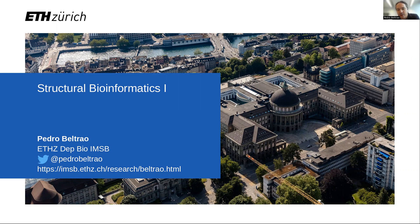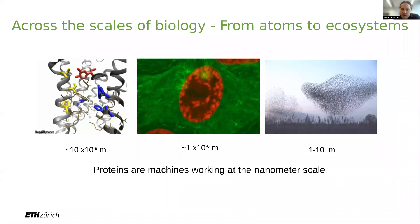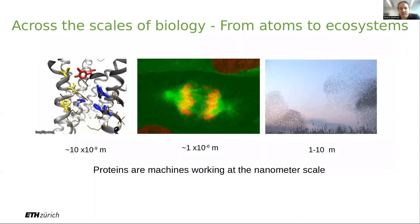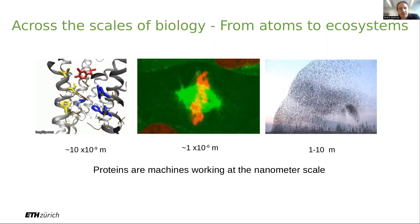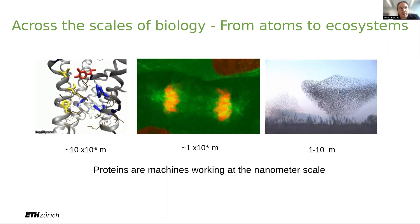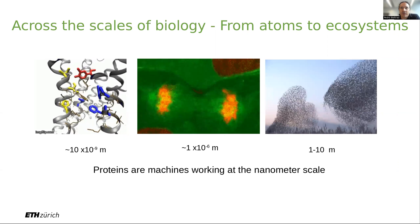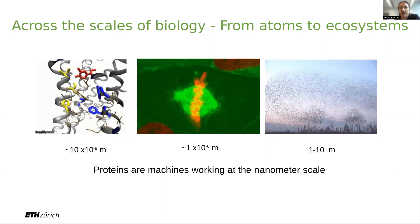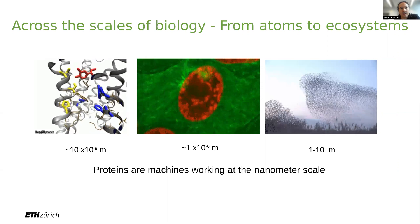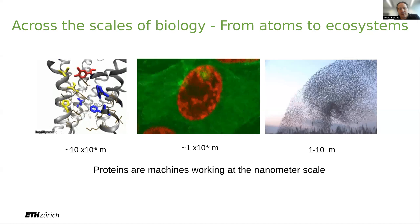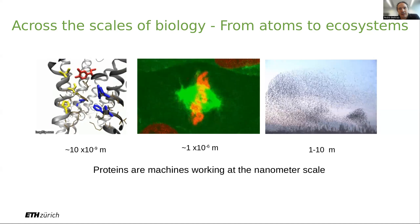Up until this point in the course, we've been talking primarily about sequences. Inside the cell, what actually does the work of most things that are required are proteins. Proteins are essentially small machines that can do quite a large number of things. I'm showing you proteins in the context of the bigger picture of the cell and organism in terms of size. Proteins are really atomic-level machines that work at the nanometer scale.